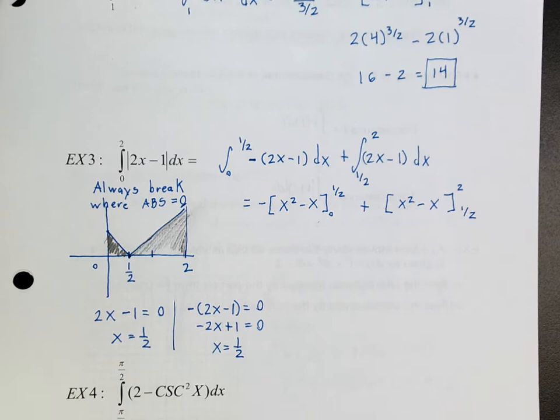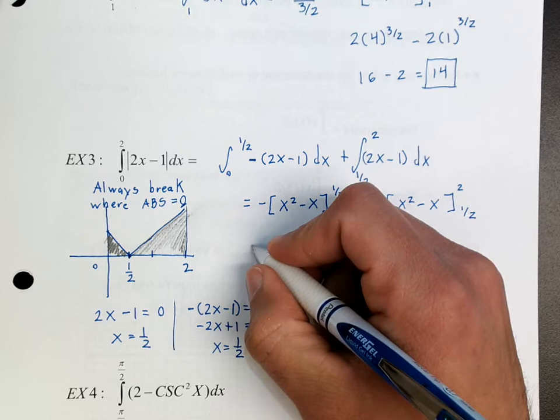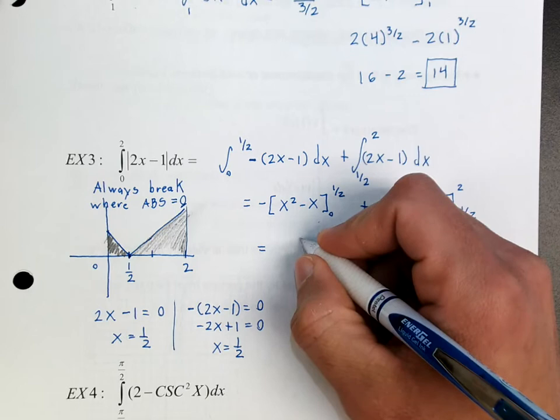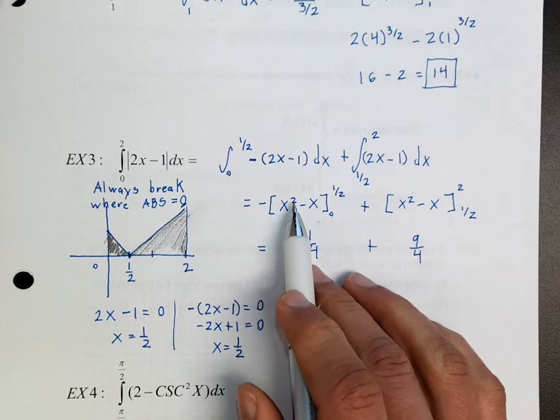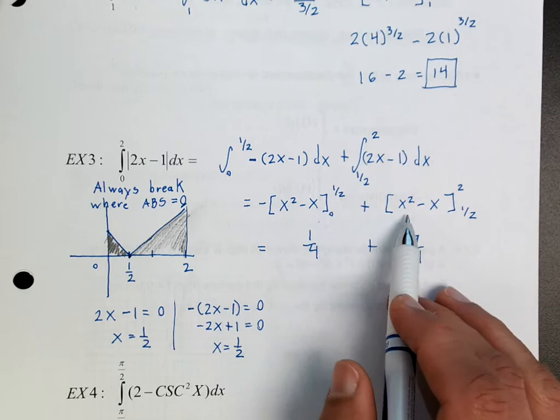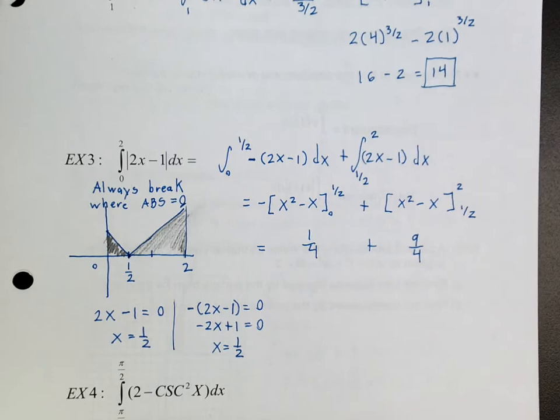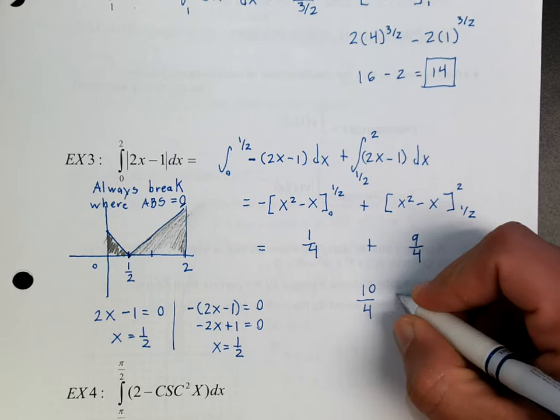All of that first part gives us 1/4, and all of the second part gives us 9/4. You have to evaluate each piece carefully — plugging in 1/2 squared minus 1/2 minus 0 and so on. After adding them together you get 10/4, which is 5/2, or 2.5. Check this on the calculator.